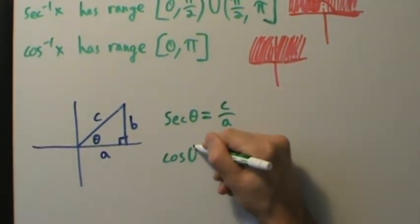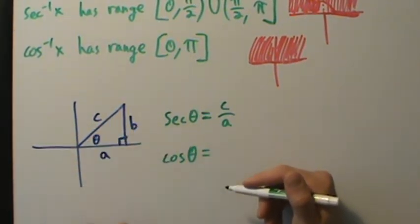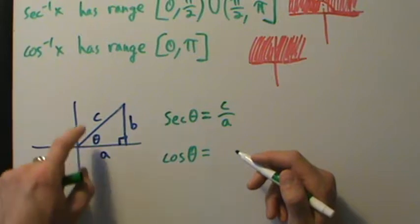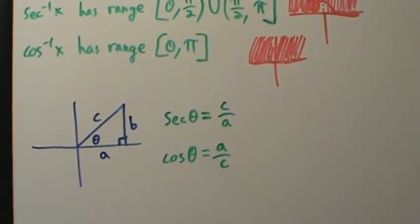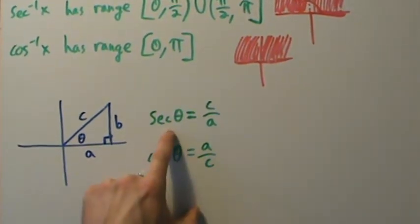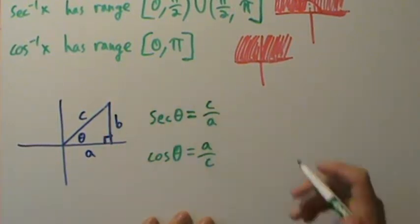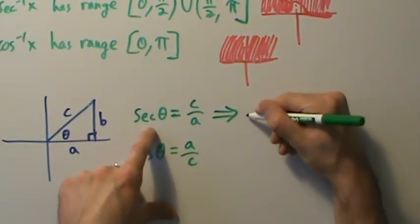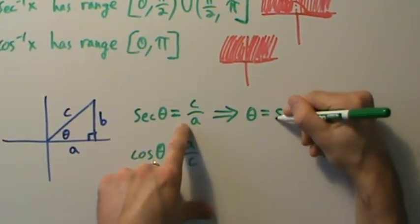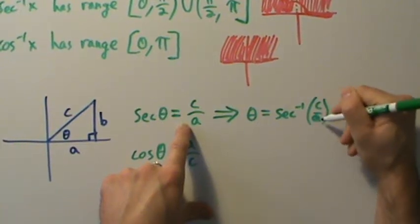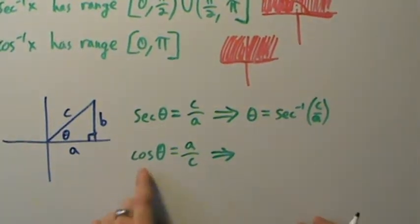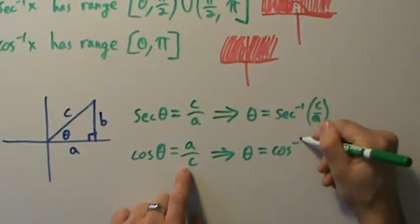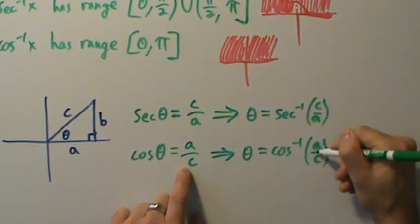The cosine of theta is the reciprocal of secant, so it's adjacent over hypotenuse — A over C. Now, if secant of theta equals C over A, we take the inverse secant of both sides: the inverse secant of secant of theta is just theta, so theta equals inverse secant of C over A. Likewise, taking the inverse cosine of both sides of cosine theta equals A over C gives us theta equals inverse cosine of A over C.